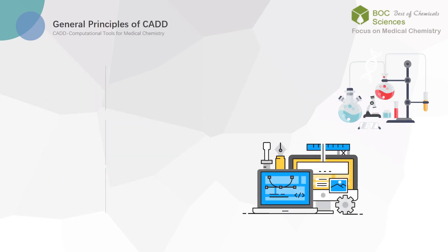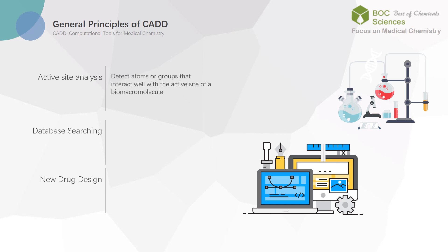Computer-aided drug design generally consists of three processes: active site analysis, database searching, and new drug design. Active site analysis can be used to detect atoms or groups that interact well with the active site of a biomacromolecule. The probes used for analysis can be simple molecules or fragments, such as water or benzene rings. By analyzing the interaction of the probes with the active sites, the possible binding sites of these molecules or fragments in the active site can be found. The information on receptor binding obtained from active site analysis is instructive for the design of new drugs.